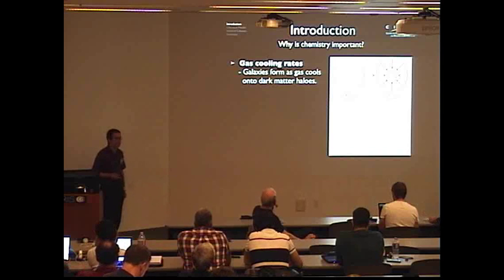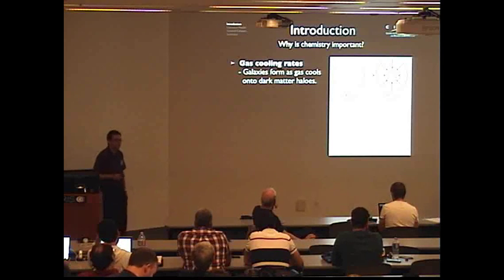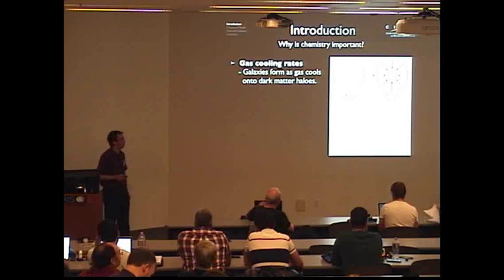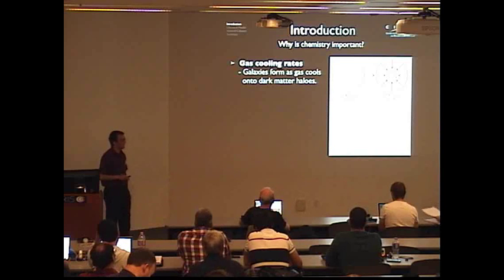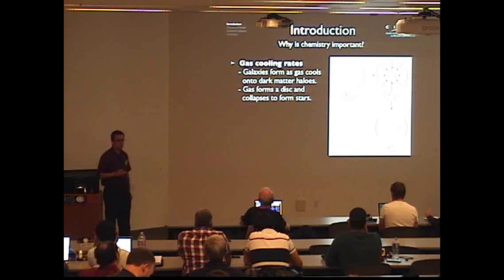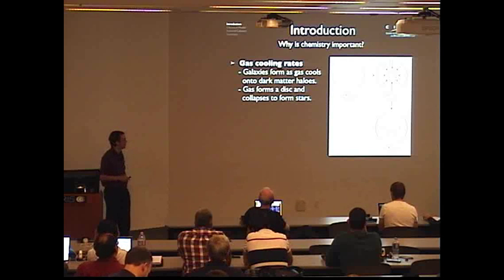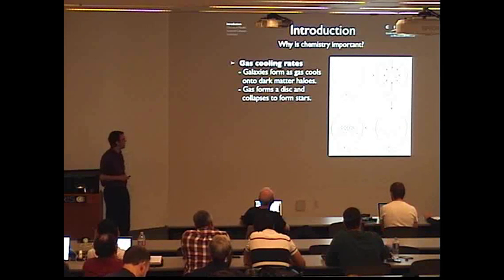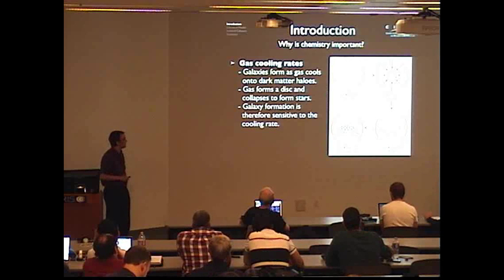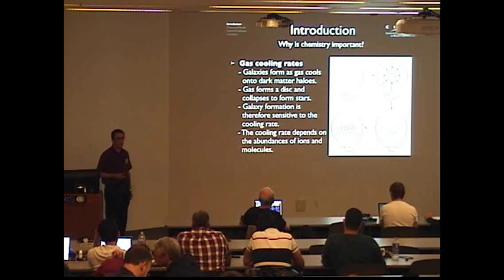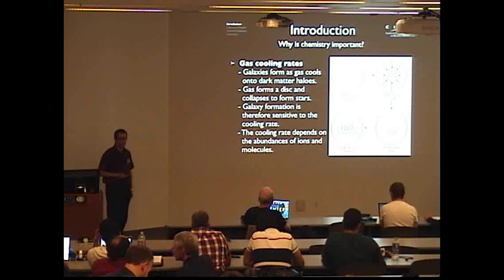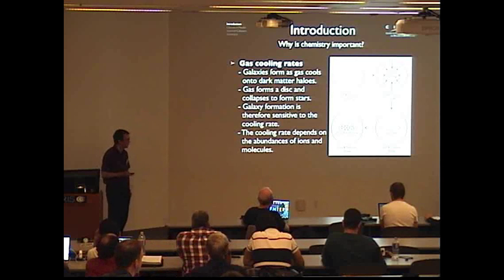There are two main reasons why we're interested in this. Firstly, the chemistry is important for the gas cooling rates. In the basic picture of galaxy formation, we start with a dark matter halo, and as the gas cools it falls to the center of the gravitational potential. The gas has angular momentum, so as it falls it rotates faster and forms a disk, then continues to cool and fragment, ultimately forming stars. So gas cooling is an important part of this, and the cooling rate depends on the abundances of various ions and molecules, since different chemical species radiate thermal energy at different rates.